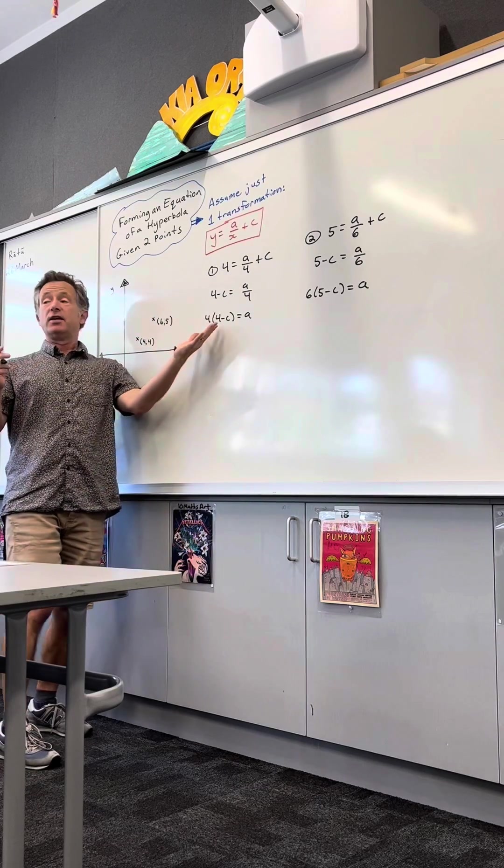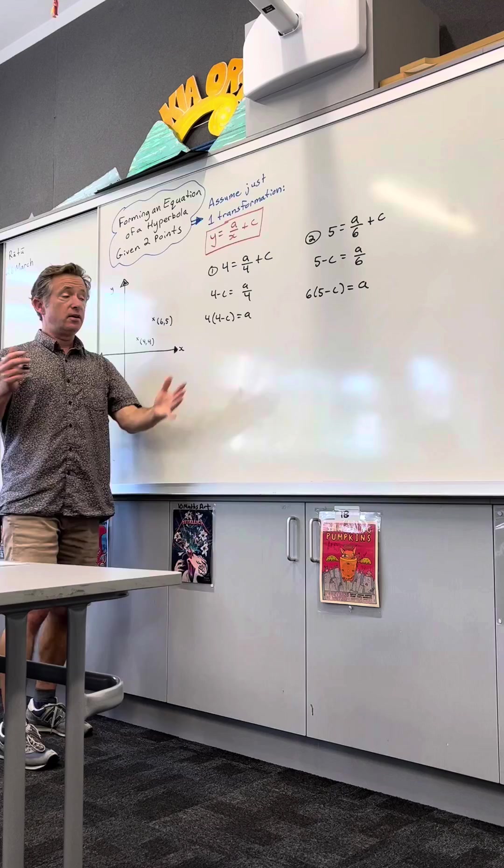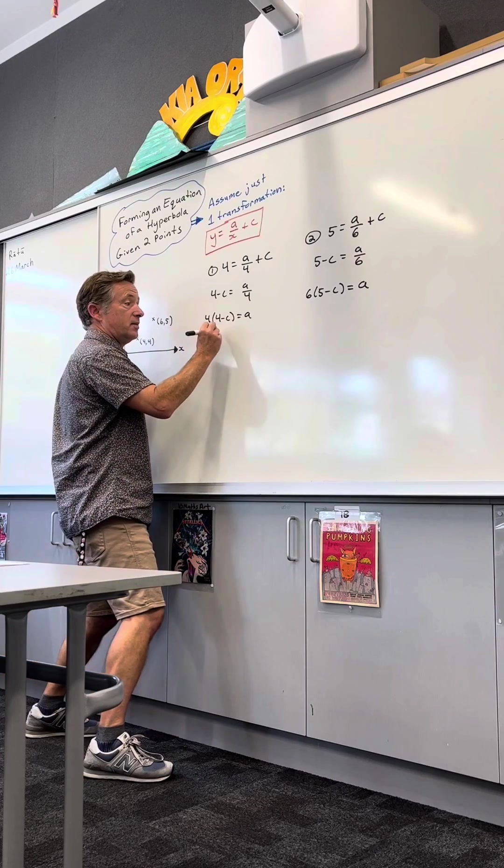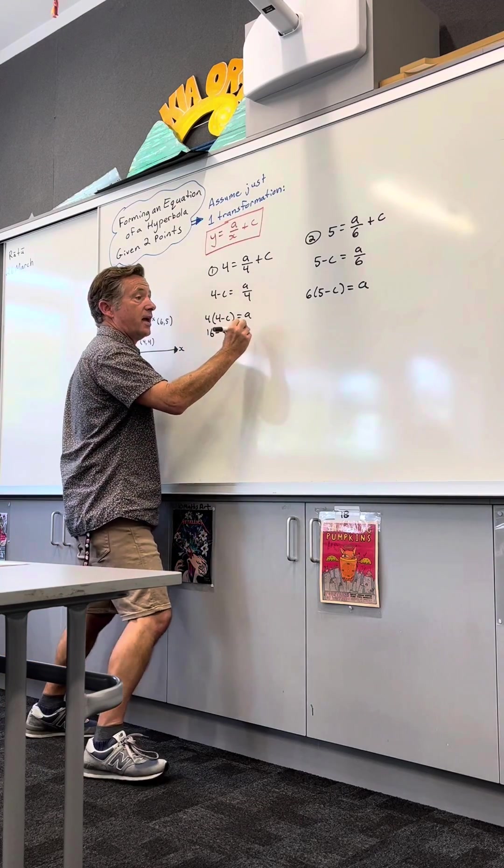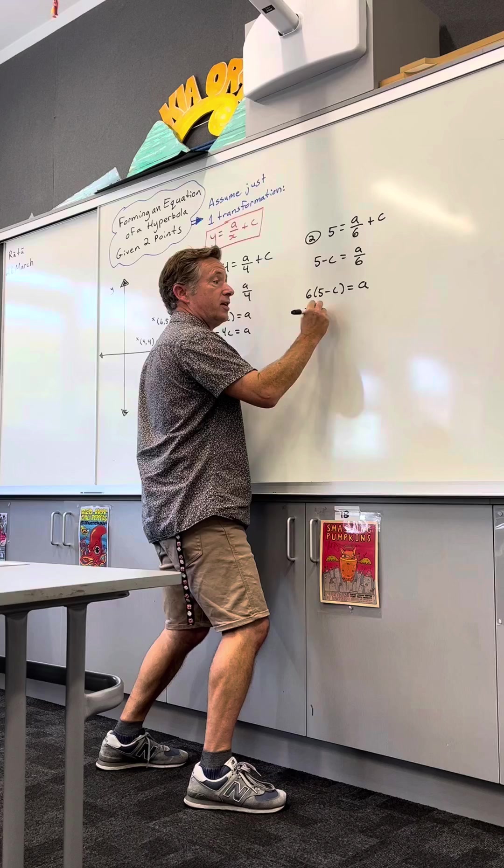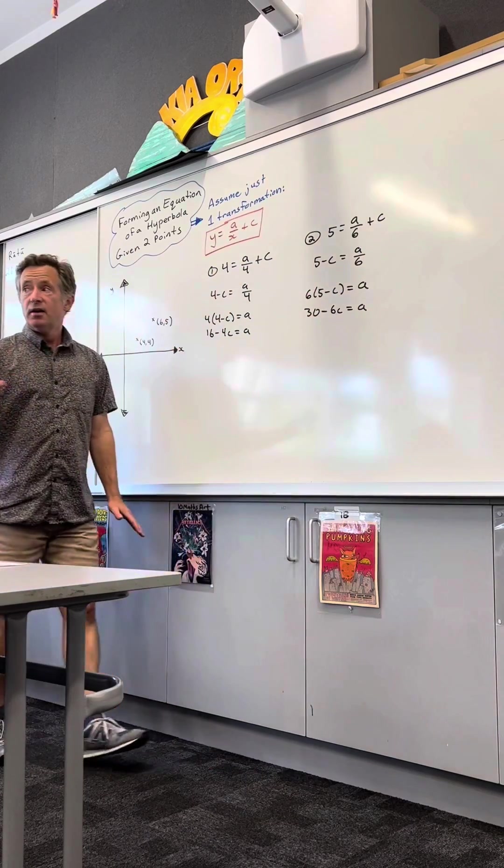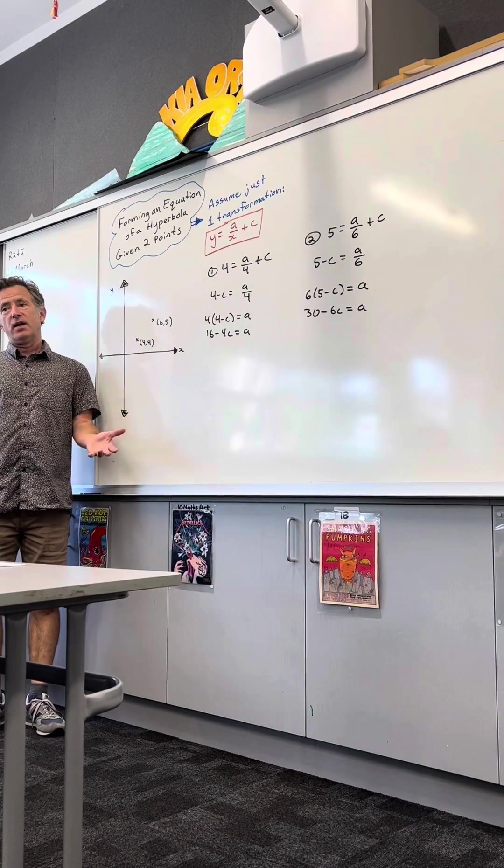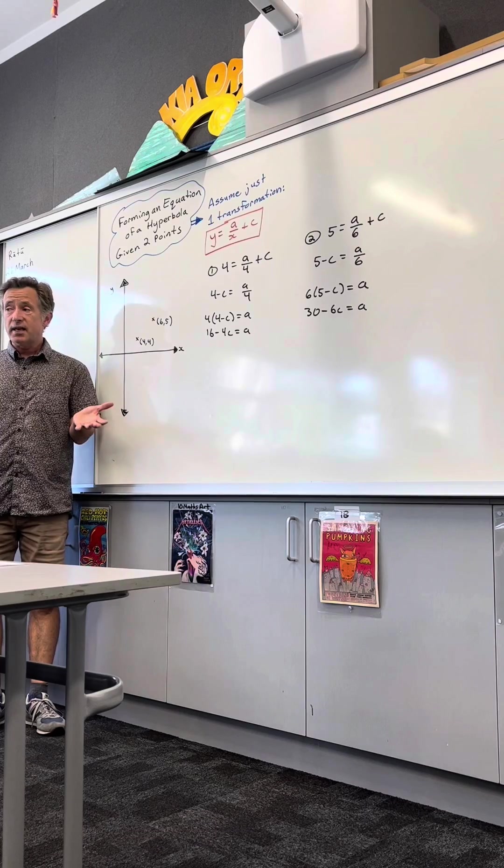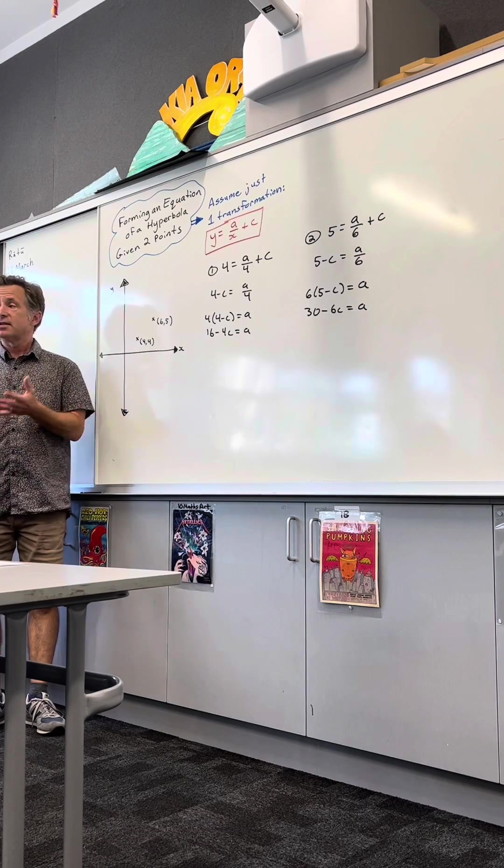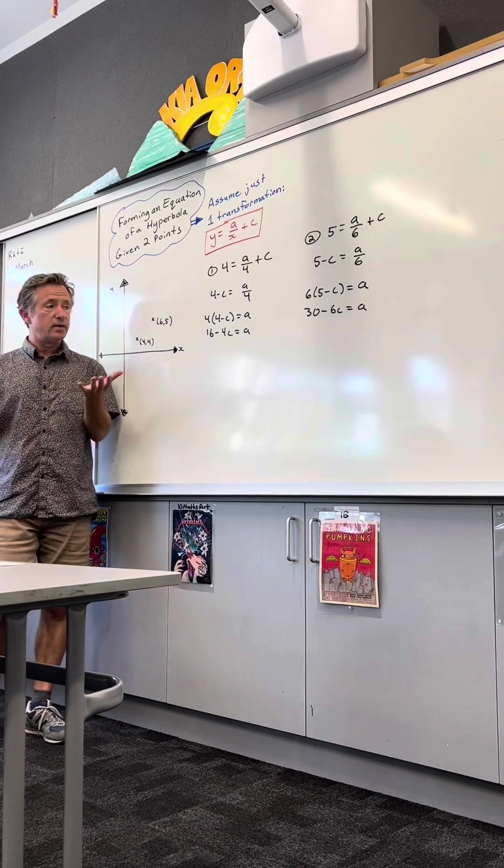Okay, so what's next? The only thing I can do to clean this up is expand. So I say 16 minus 4c equals a. 30 minus 6c equals a. And at this point, if you think, oh my gosh, this is a lot of work. It is, it is a lot of work. This step, this one is quite complex.